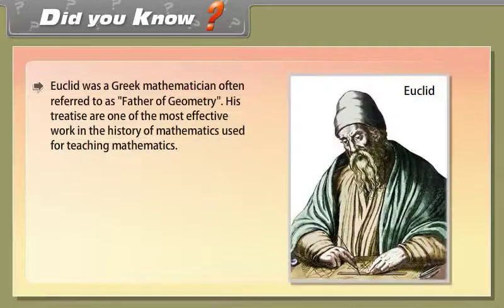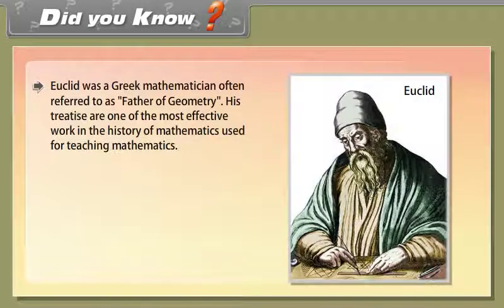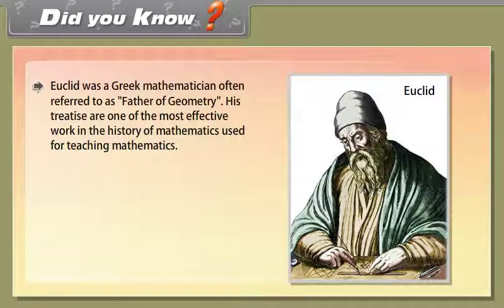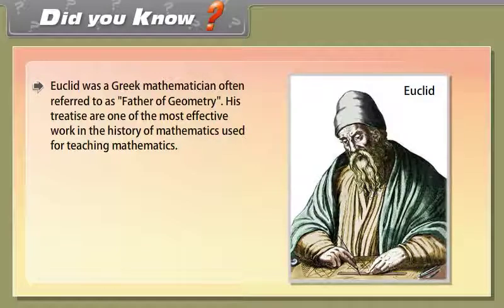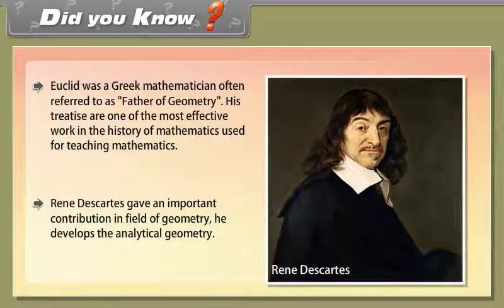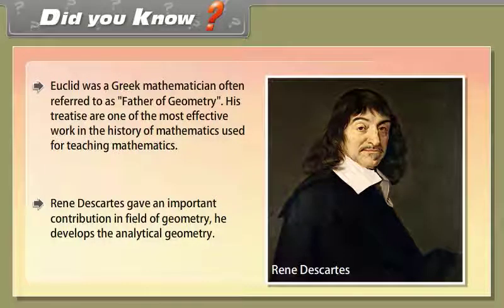Did you know? Euclid was a Greek mathematician often referred to as the father of geometry. His Elements is one of the most influential works in the history of mathematics, used for teaching mathematics. René Descartes gave an important contribution in the field of geometry; he developed analytical geometry.